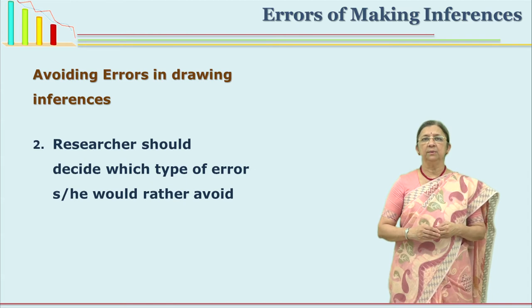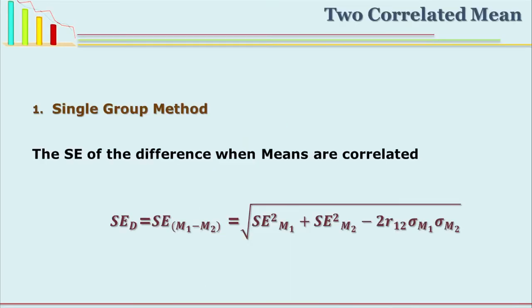We have been discussing the significance of difference between two means when the means were uncorrelated or independent. Now there is another set of means which are correlated. Let us see how the difference between correlated means is found to be significant or not. There can be two or three situations because we use different designs of experiments. The first type is the single group method: in a single group method we give pre-test and post-test, generally the same test given before and after the experiment. So the means are correlated because they are on the same test.